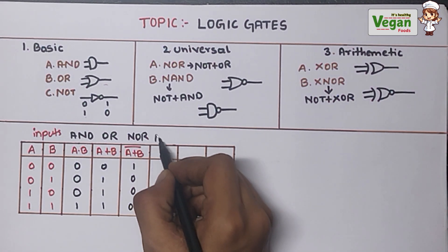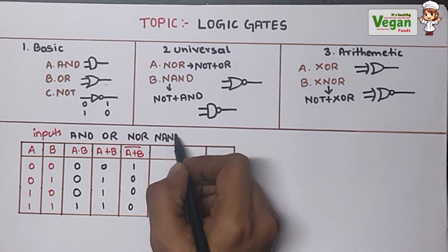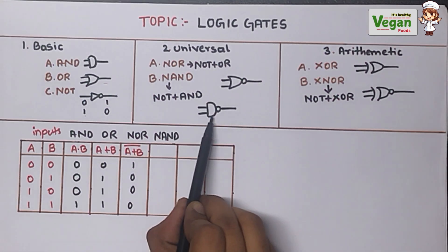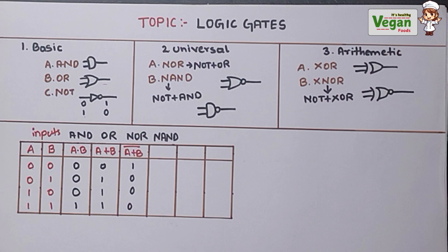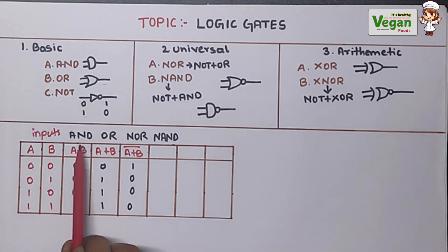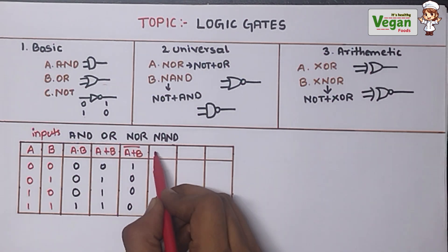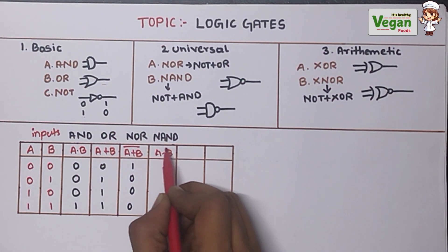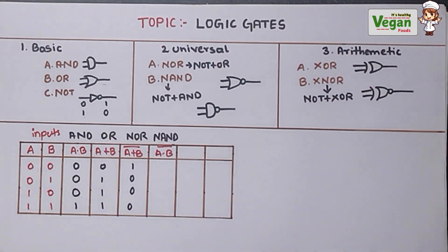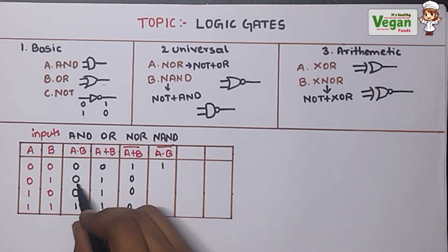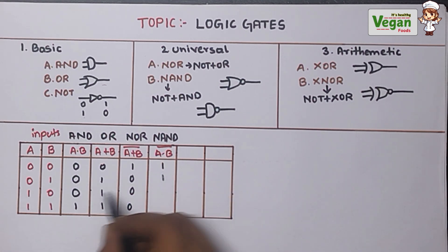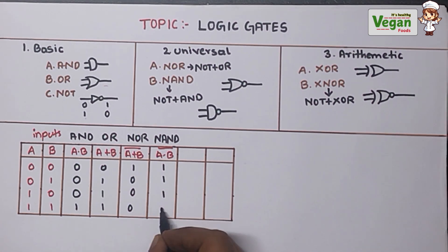Next is the NAND gate. NAND gate is the combination of AND gate with NOT gate in front of it. It will complement the output of the AND gate. The formula is A into B bar. So: 0 complements to 1, 0 to 1, 0 to 1, and 1 becomes 0.